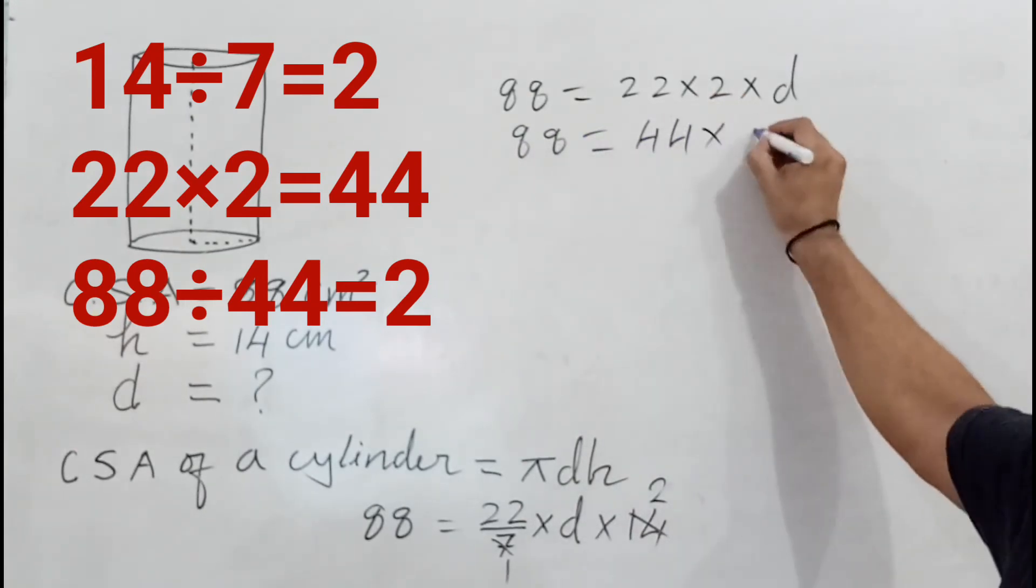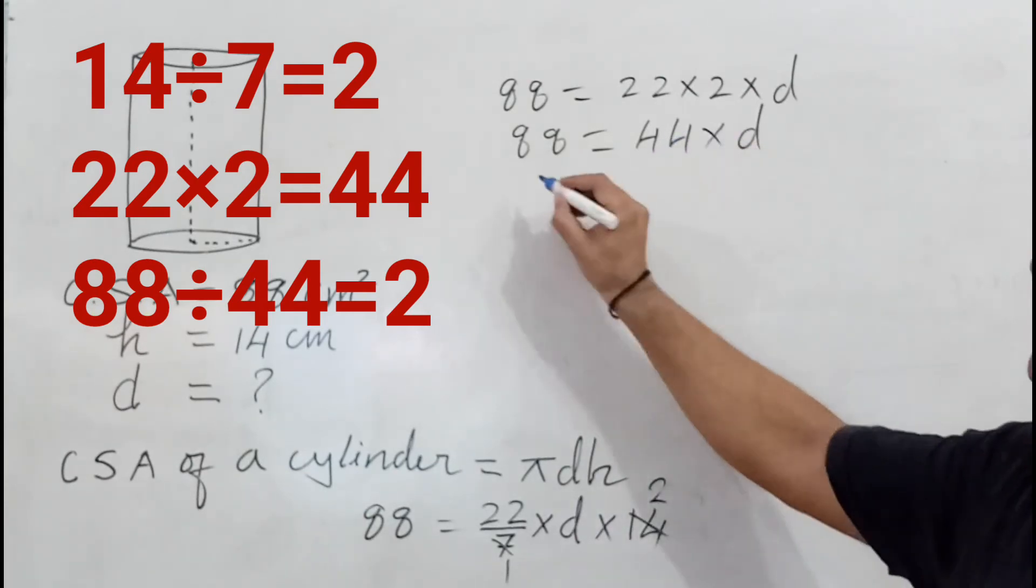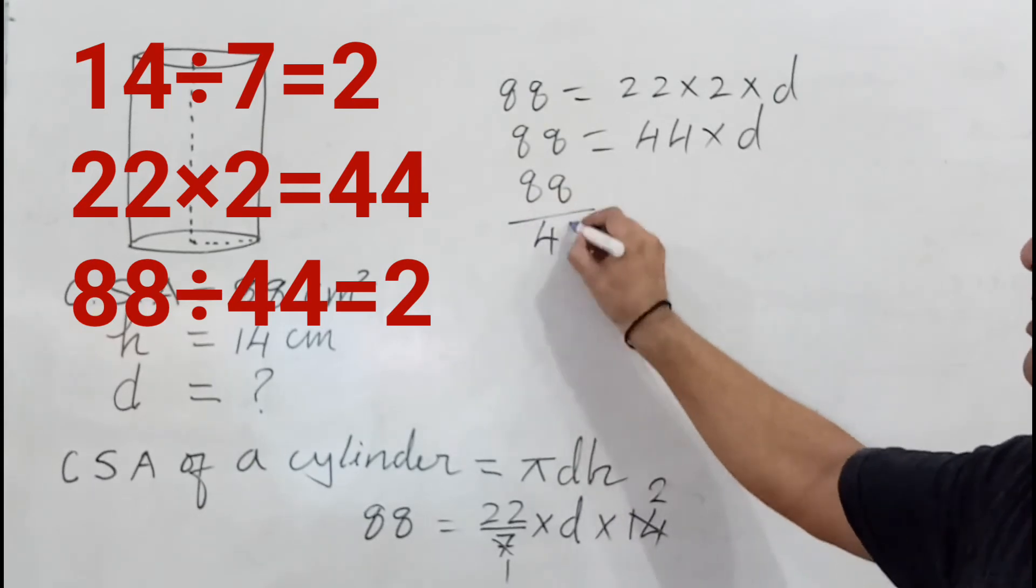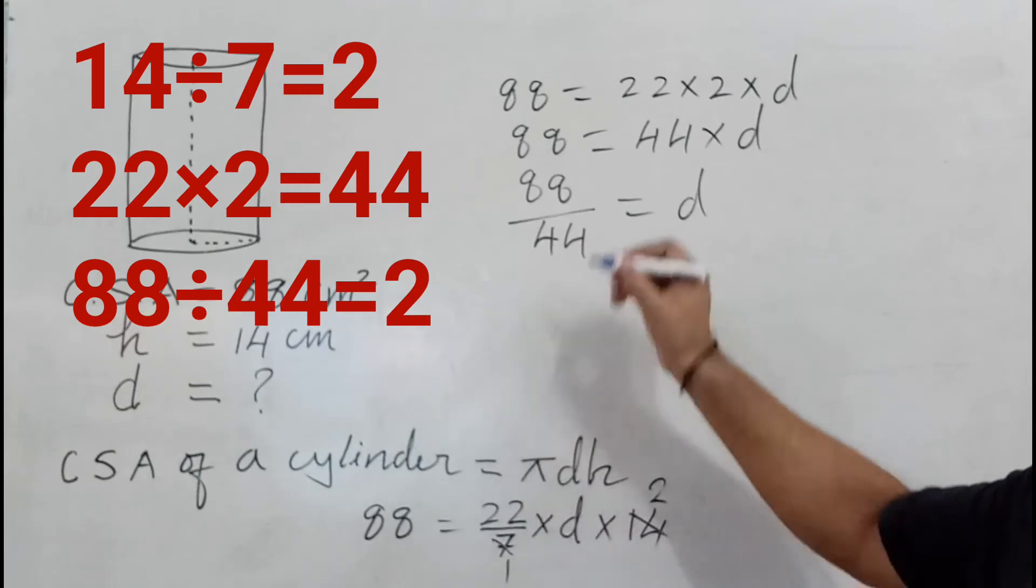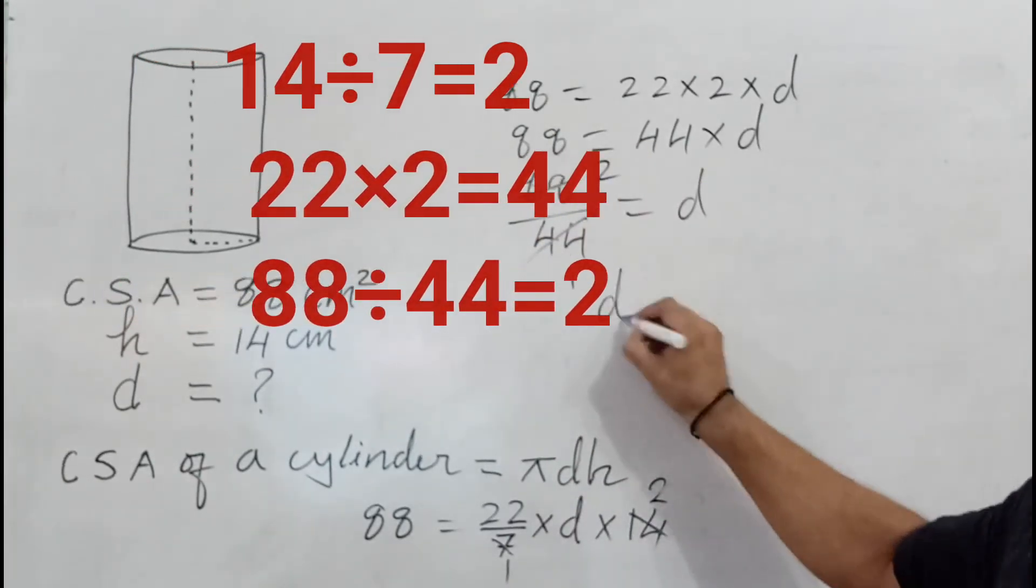Then transpose 44 - multiplication becomes division - so 88 divided by 44 equals d. Simplify: 88 divided by 44 equals 2, so we get d equals 2.